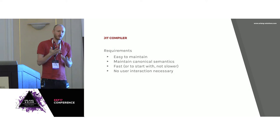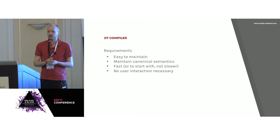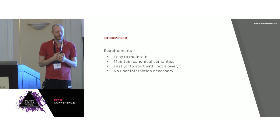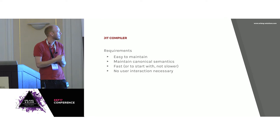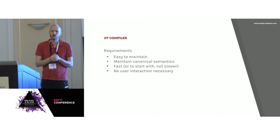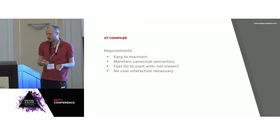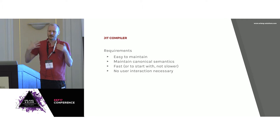Some of the requirements we have on this JIT compiler: it should be easy-ish to maintain, with low maintenance burden — we're about three to five people at OTP at Ericsson who know how to do these things, and spending more than one person maintaining it isn't viable. We need something that easily maintains the canonical semantics of the virtual machine — we don't want behavior differences between JIT-compiled code and interpreted code. We want it to be fast, obviously, and devoid of user interaction — you shouldn't have to tune it manually for specific scenarios.